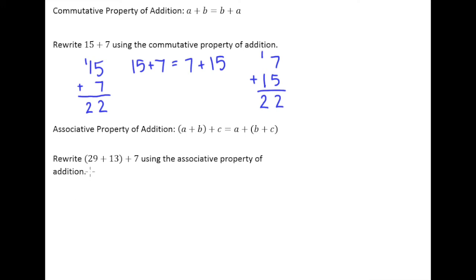So in this example, it says rewrite 29 plus 13 plus 7 using the associative property of addition. So right now, this is what we have.